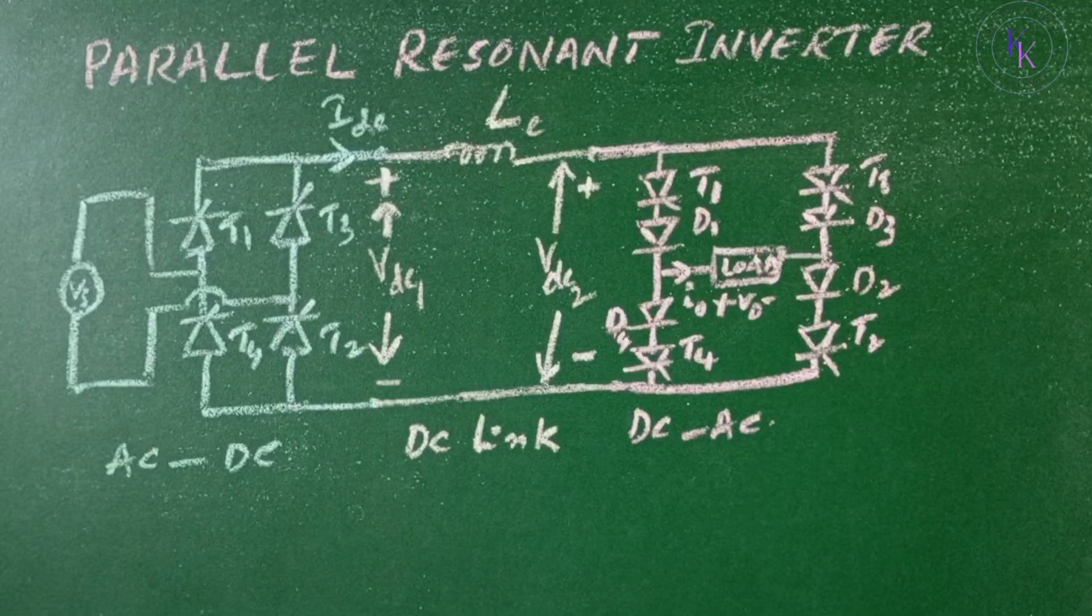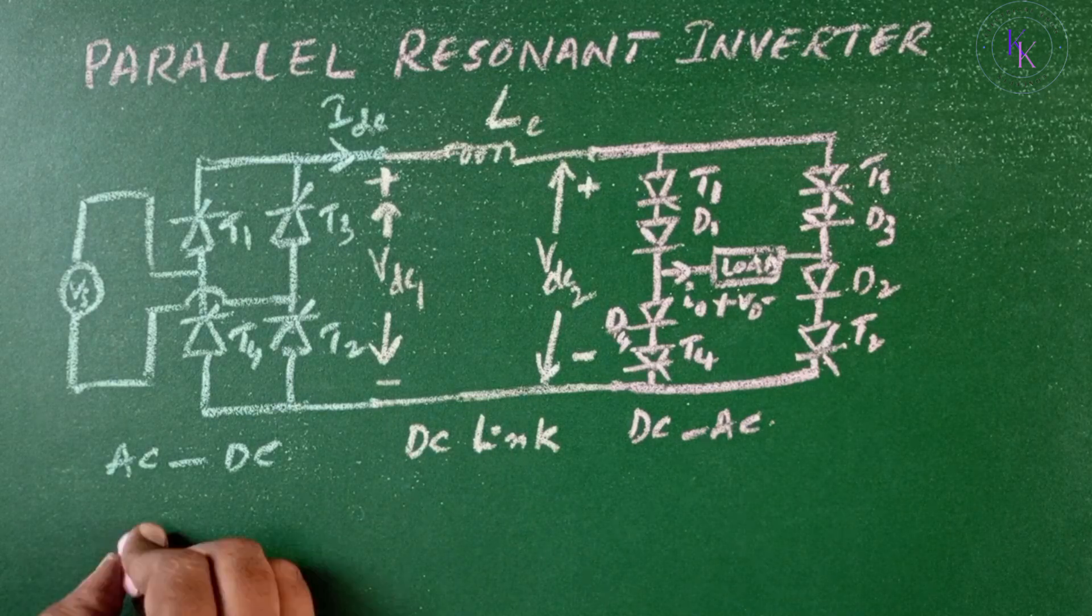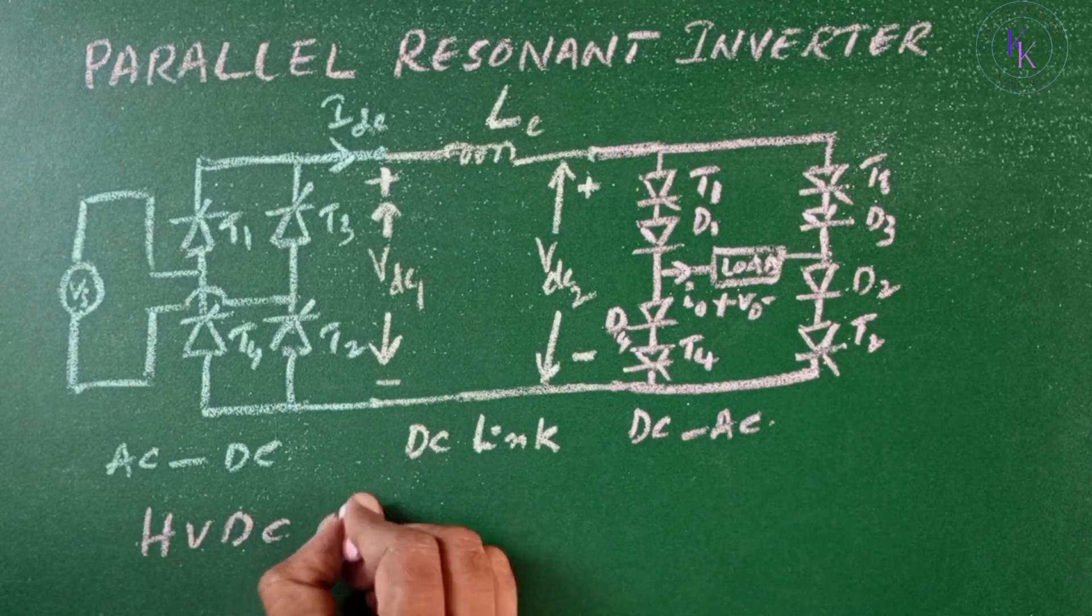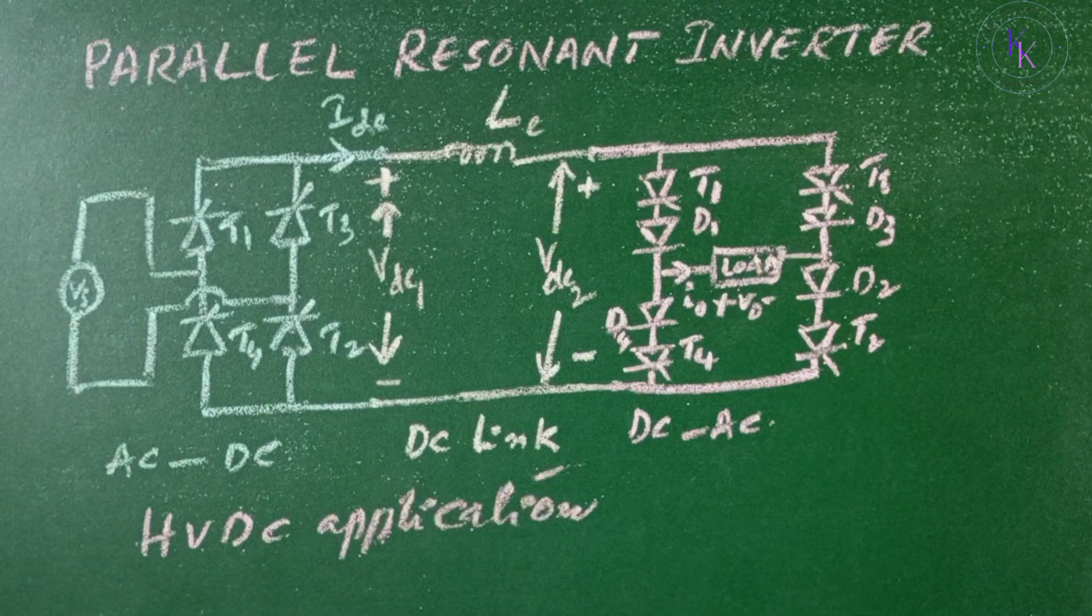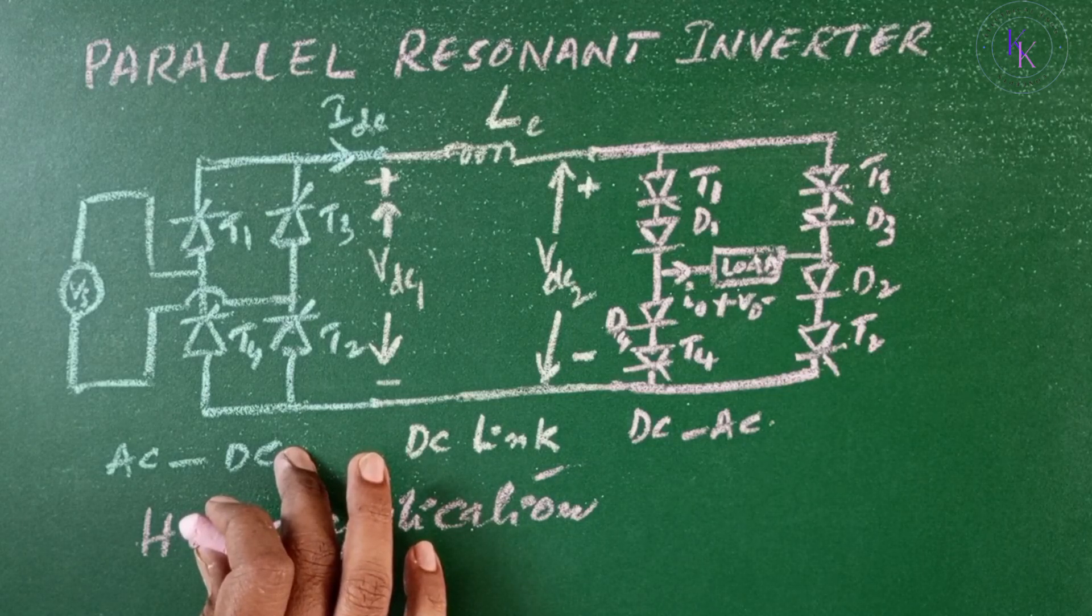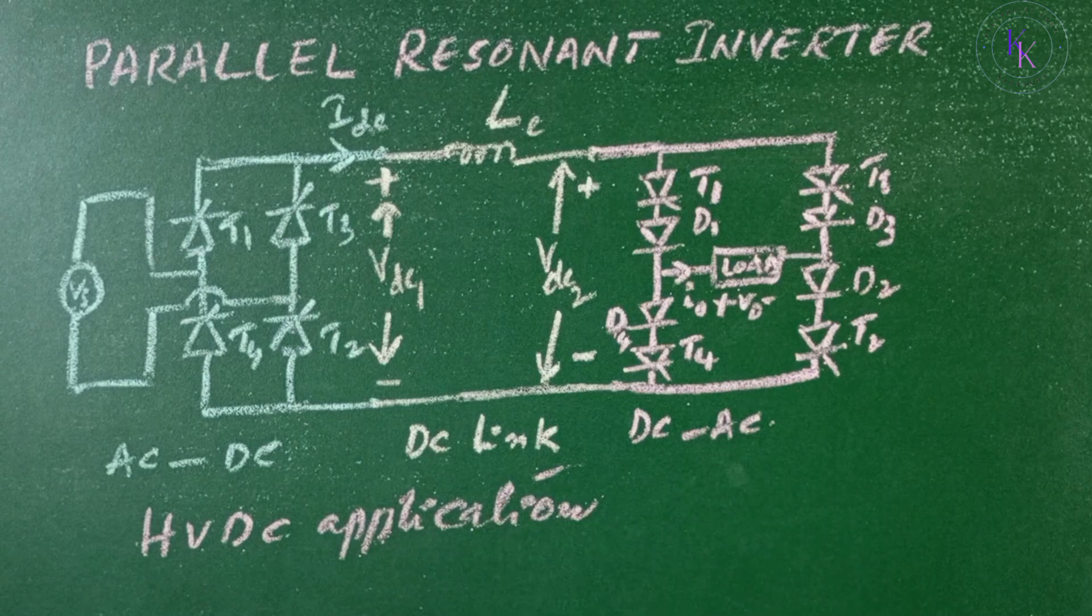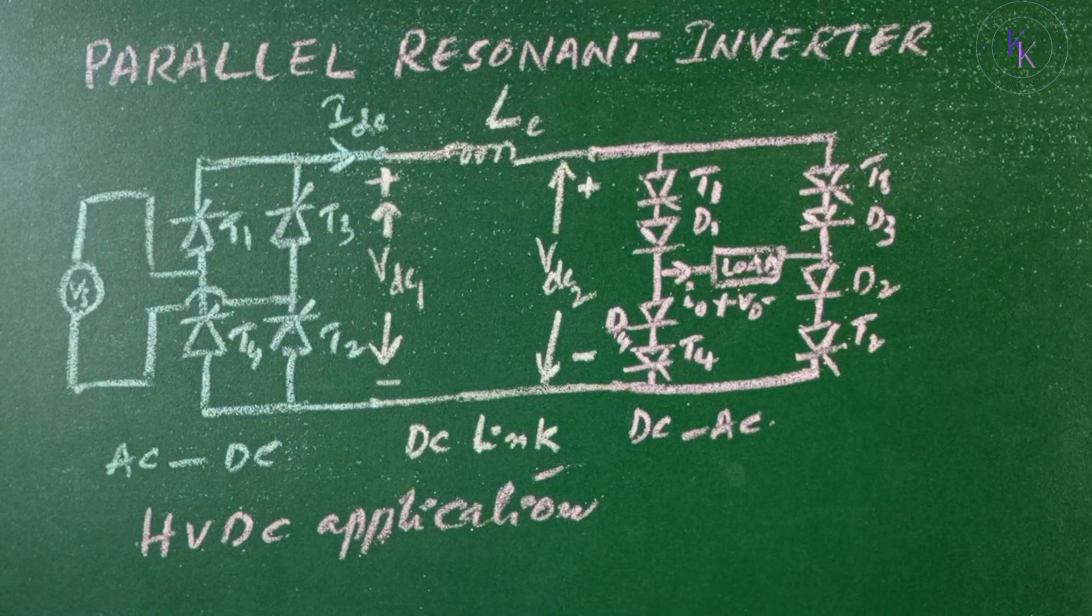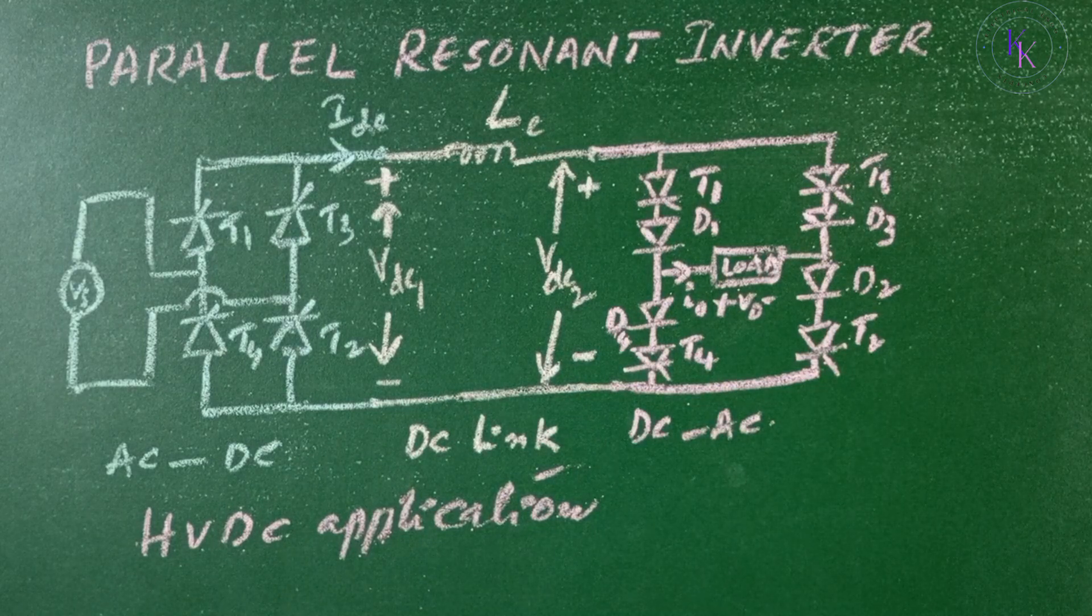This concept can be extended to HVDC application, in which AC voltage is converted to DC voltage in the first stage and then converted back to AC at the final stage. The transmission is normally done at constant DC through a DC link. A single phase version is shown here.